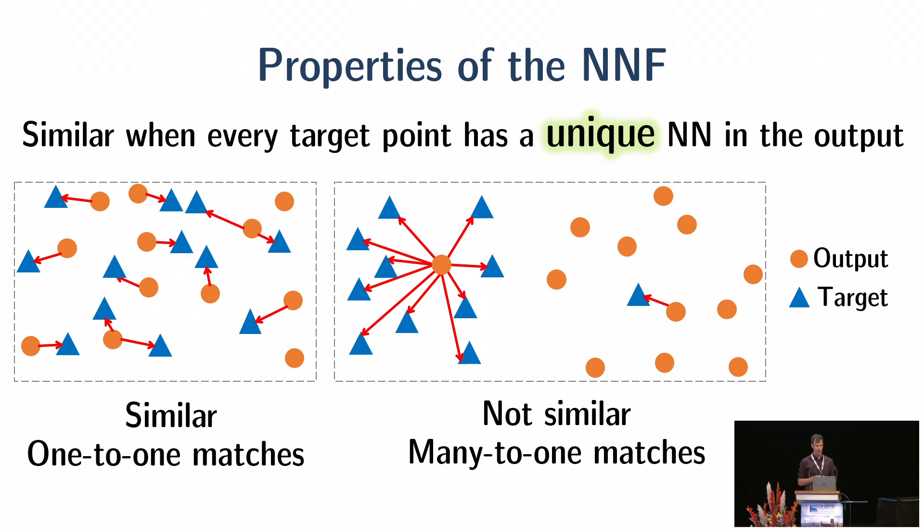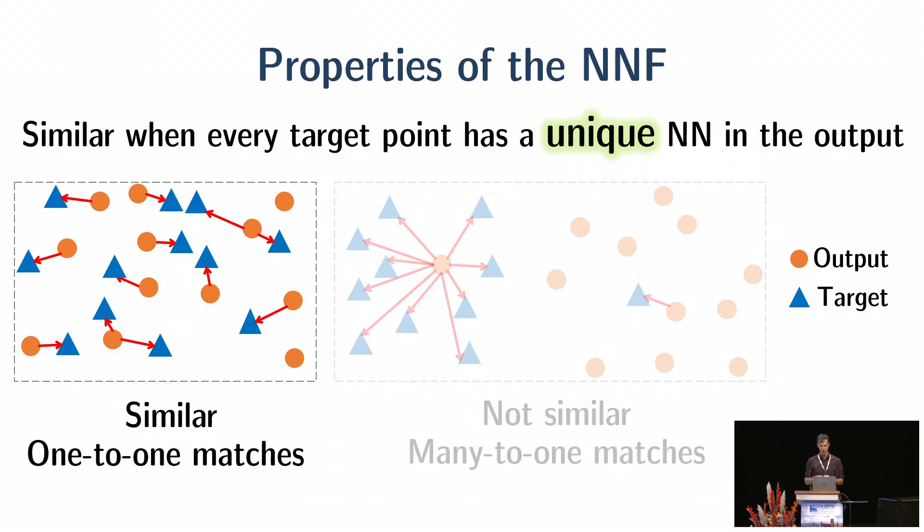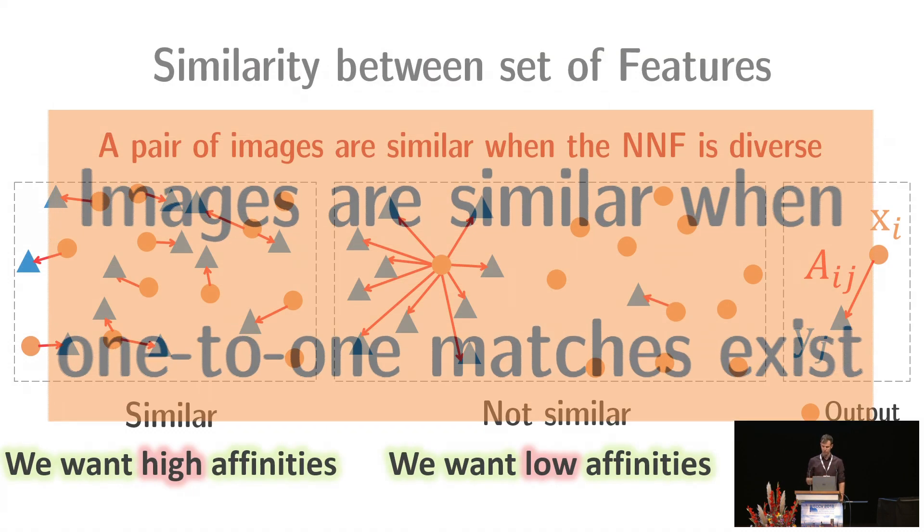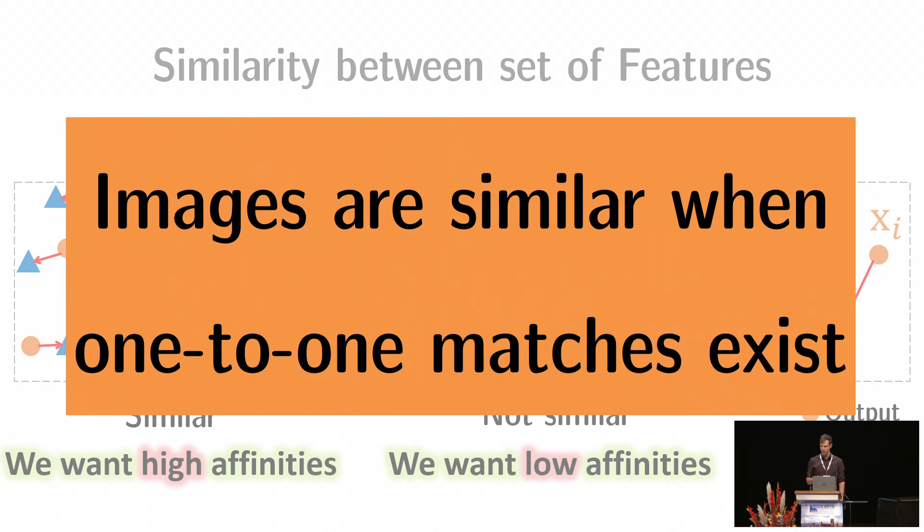Let me show you how the nearest neighbor looks like when the images are similar and not similar in this 2D illustration. When the images are similar, good one-to-one match exists, as you can see here. And when the images are not similar, many-to-one match exists. In other words, images are similar when a one-to-one match exists.